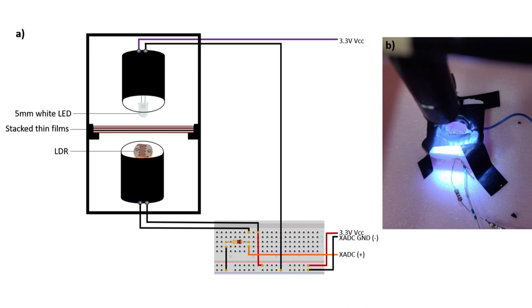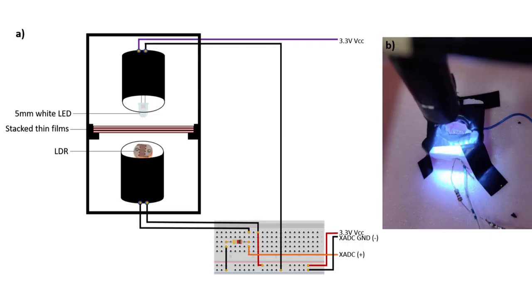Therefore, I decided to use a light-dependent resistor, as can be seen in this diagram, to measure the amount of light intensity that penetrates through my thin films. The resistance of an LDR decreases as the light intensity falling on it increases. Therefore, I had to take analog readings from my LDR voltage divider. For this purpose, the XADC port, which converts analog readings into digital readings embedded on my Basys III, was very helpful.